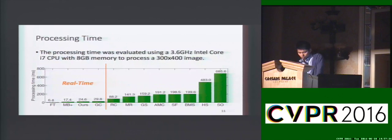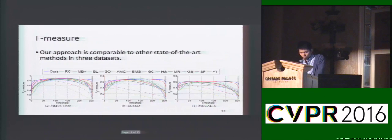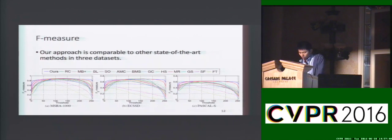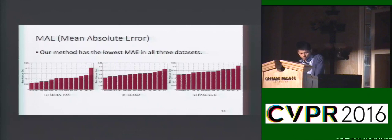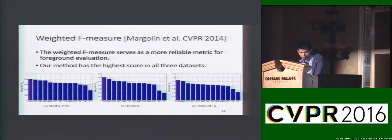Our method is able to process a standard 300 by 400 image in real-time. For accuracy evaluation, our method — the blue curves here — has comparable F-measure scores against others. Our method is able to achieve the lowest mean absolute error in all three datasets. We also evaluate our method with a weighted F-measure, which is a more reliable metric for foreground evaluation.